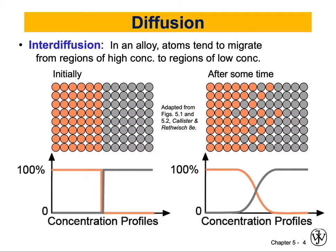The first term we would like to learn about is something called interdiffusion. Please remember that we are talking about diffusion in solids. Alloys are defined as metals in general — they're metals made of at least two elements, such as cobalt chromium alloys or titanium cobalt alloys. And in alloys, atoms tend to migrate from regions of high concentration to regions of low concentration. We're talking about solids now.